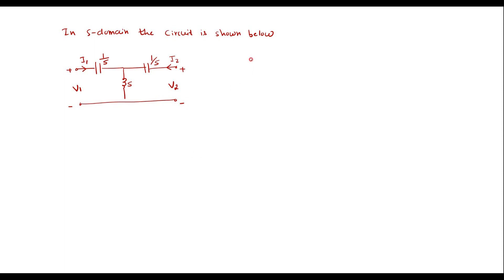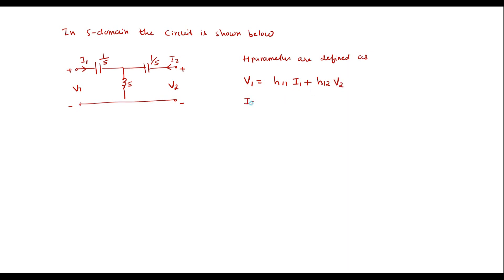First, let me write the H parameter equations. H parameters are defined as: V1 = H11·I1 + H12·V2 (equation 1), and I2 = H21·I1 + H22·V2 (equation 2).